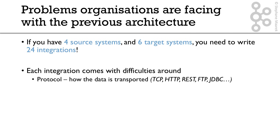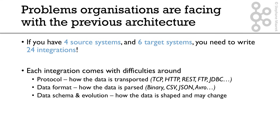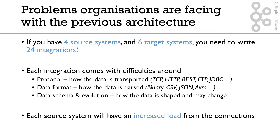Around the protocol you have to choose, which is how the data is transported — so TCP, HTTP, REST, FTP, JDBC. Then the data format, how the data is parsed — so binary, CSV, JSON, Avro, Thrift, and others. And the data schema and evolution, so how the data is shaped and how it may change in the future. Additionally, each time you integrate a source system with a target system, there will be an increased load from the connections.